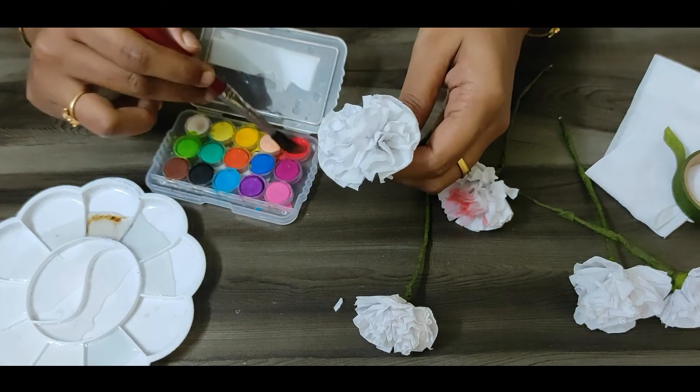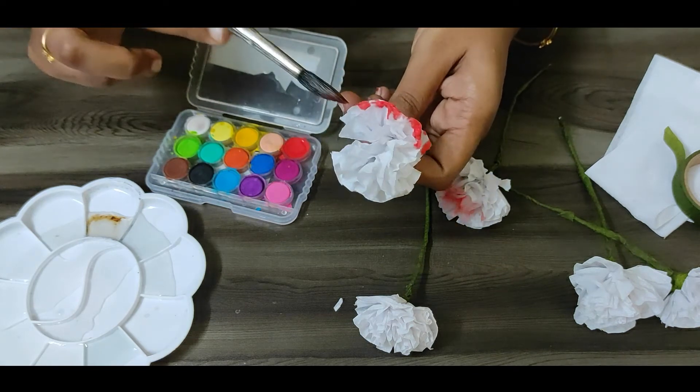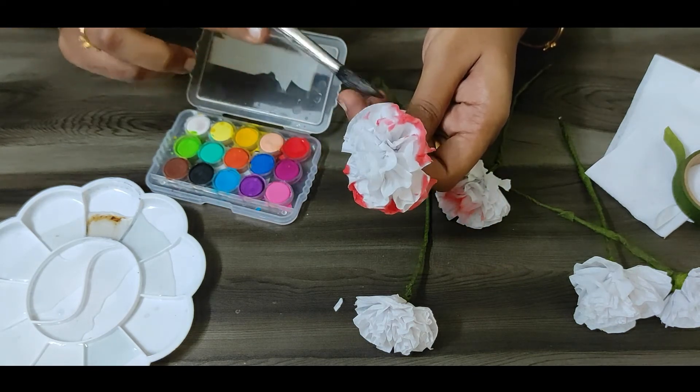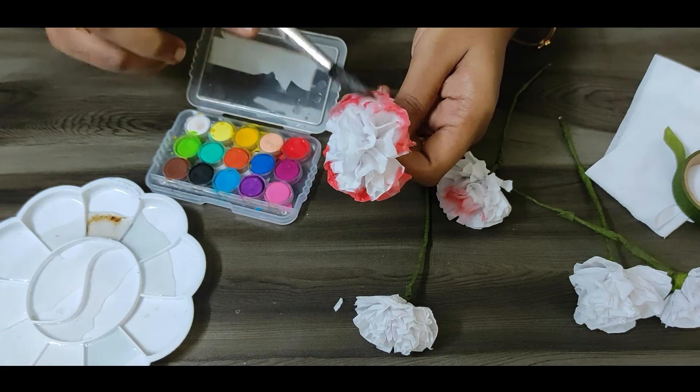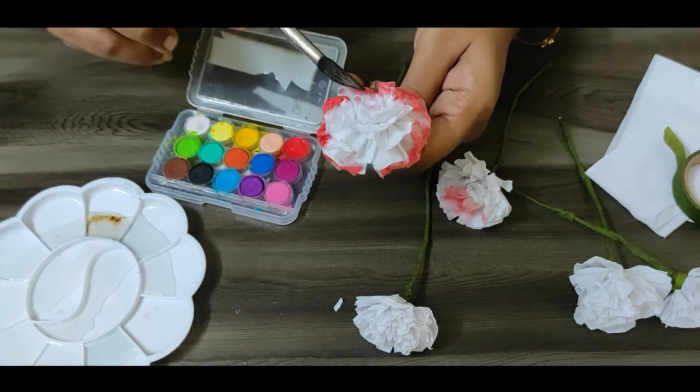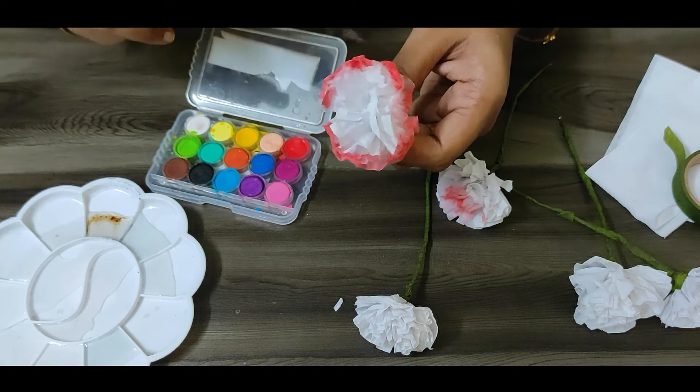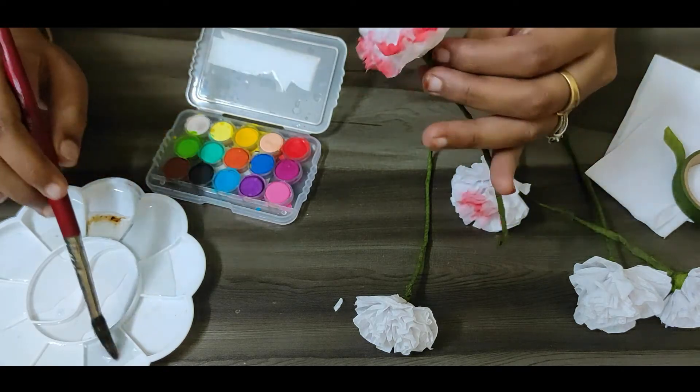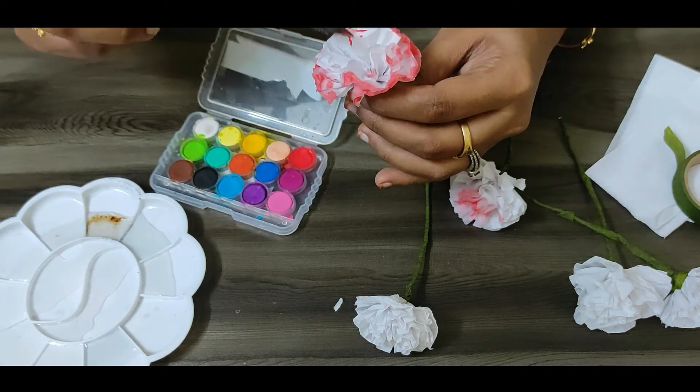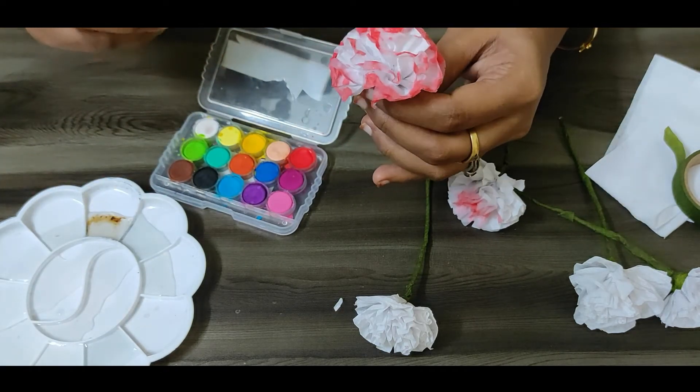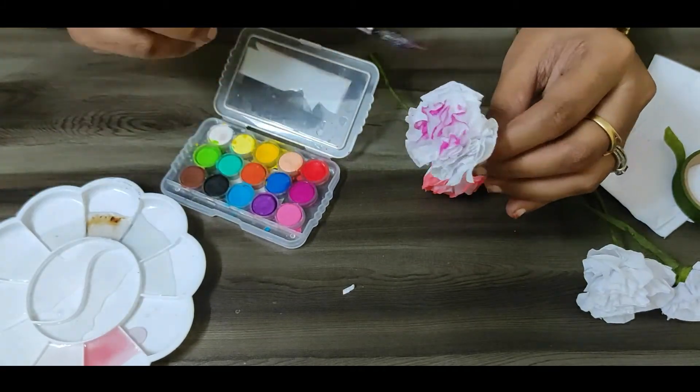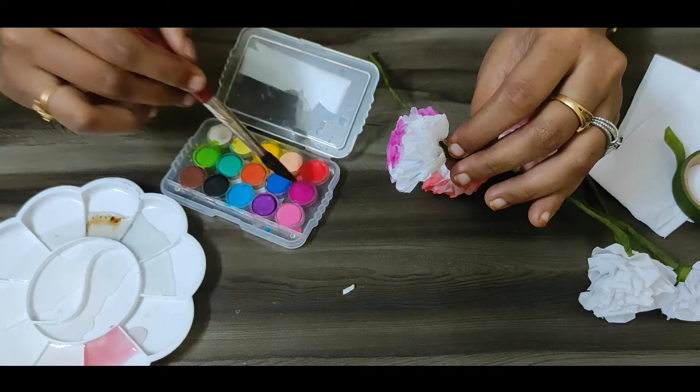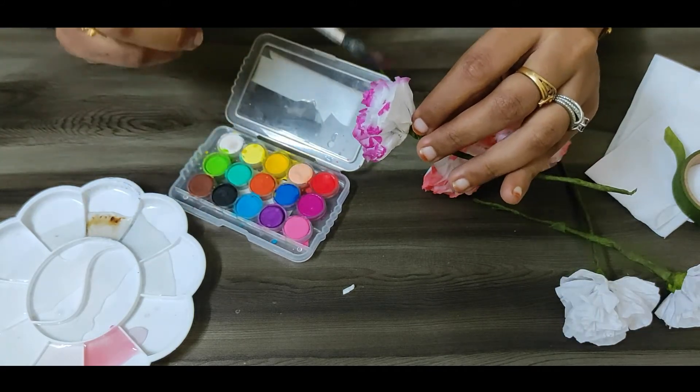Now we have to use the colors. We can use the water color. The edges will absorb the tissue paper. Dip in the water. Dip in the paint. Dip in the corners. It will have a nice effect. We will add a gradient color. It will be very different. We will use the corners.